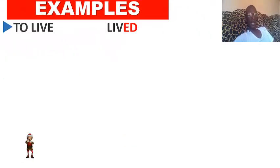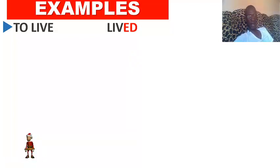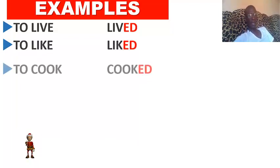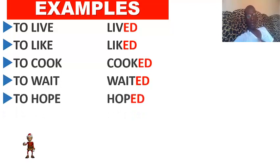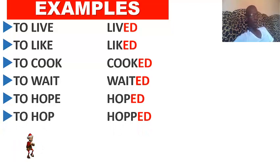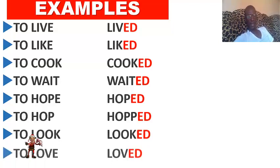Regular verbs are verbs ending in '-ed' at the preterite. Ce sont les verbes terminés par '-ed' au preterite. For example: to live → lived (habiter), to like → liked (aimer), to cook → cooked (cuisiner), to wait → waited (attendre), to hop → hopped (sauter), to look → looked (regarder), to love → loved (aimer, chérir).